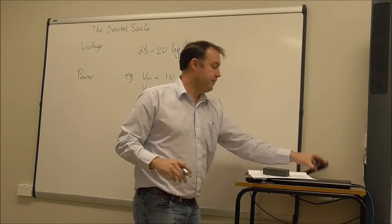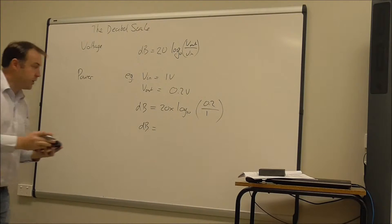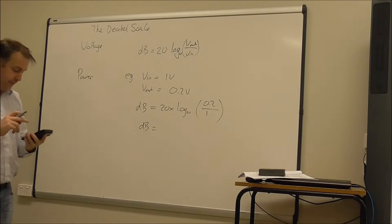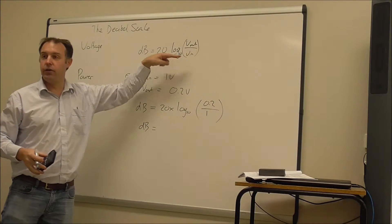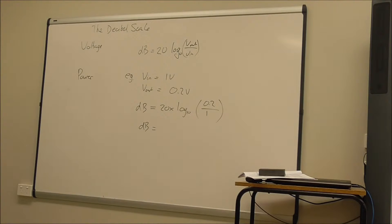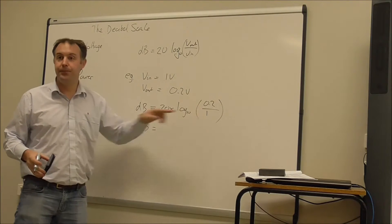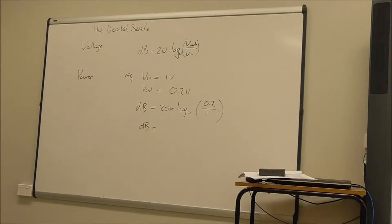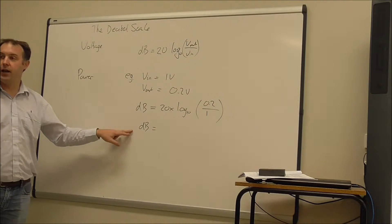And I'm plugging it into my calculator. I can tell you now it's going to be a negative value, and it's negative value because the output is lower than the input. Well, this ratio is less than 1. The ratio is less than 1. The dB is negative.